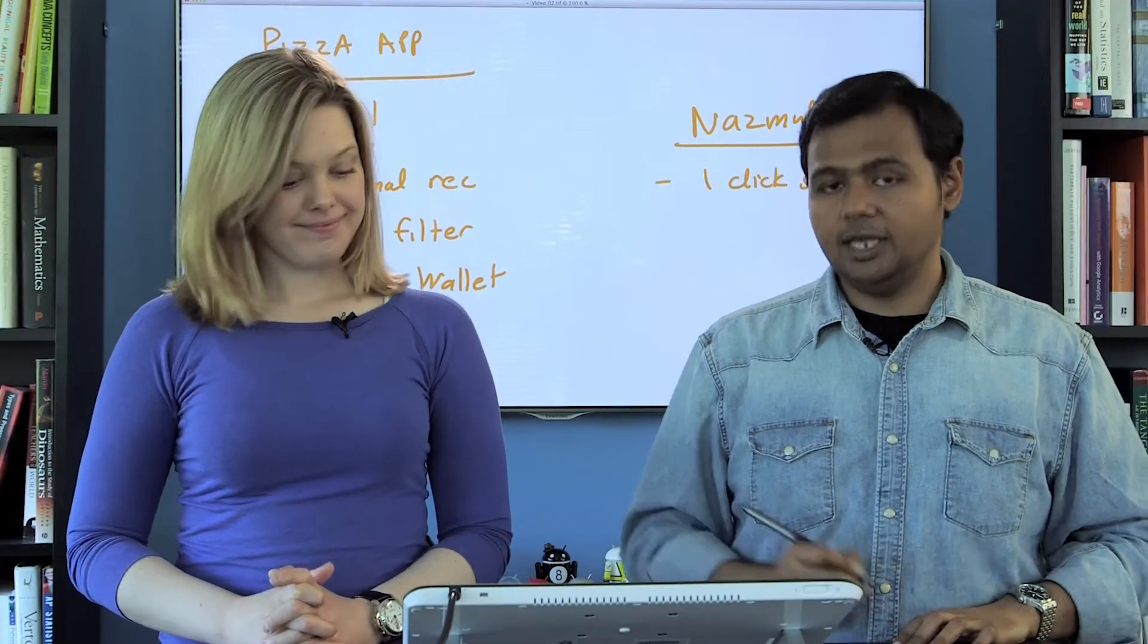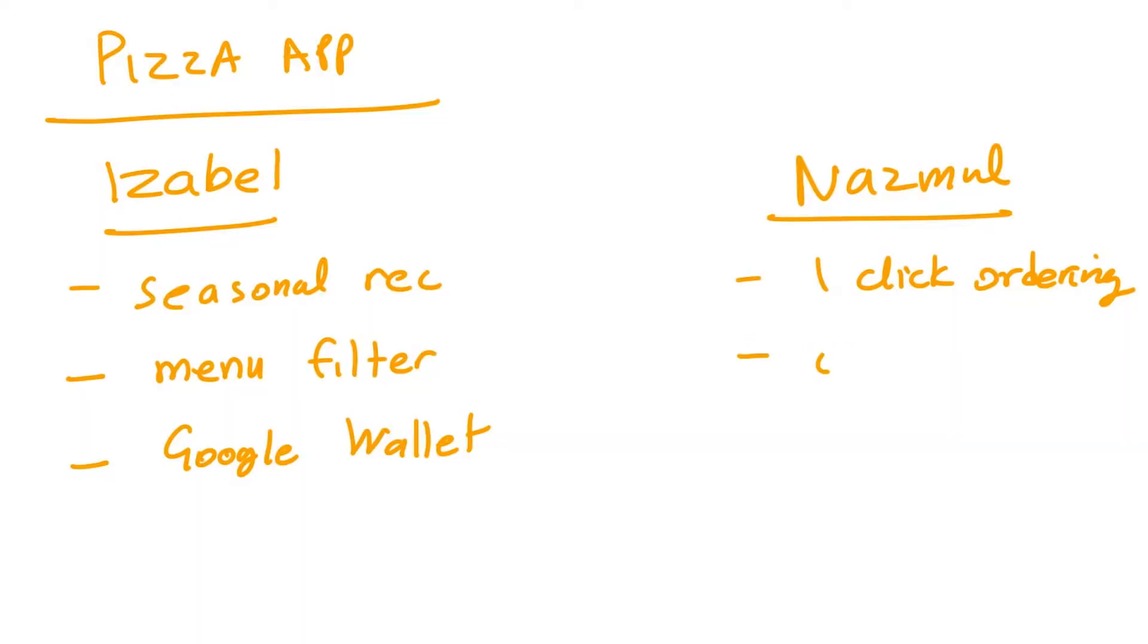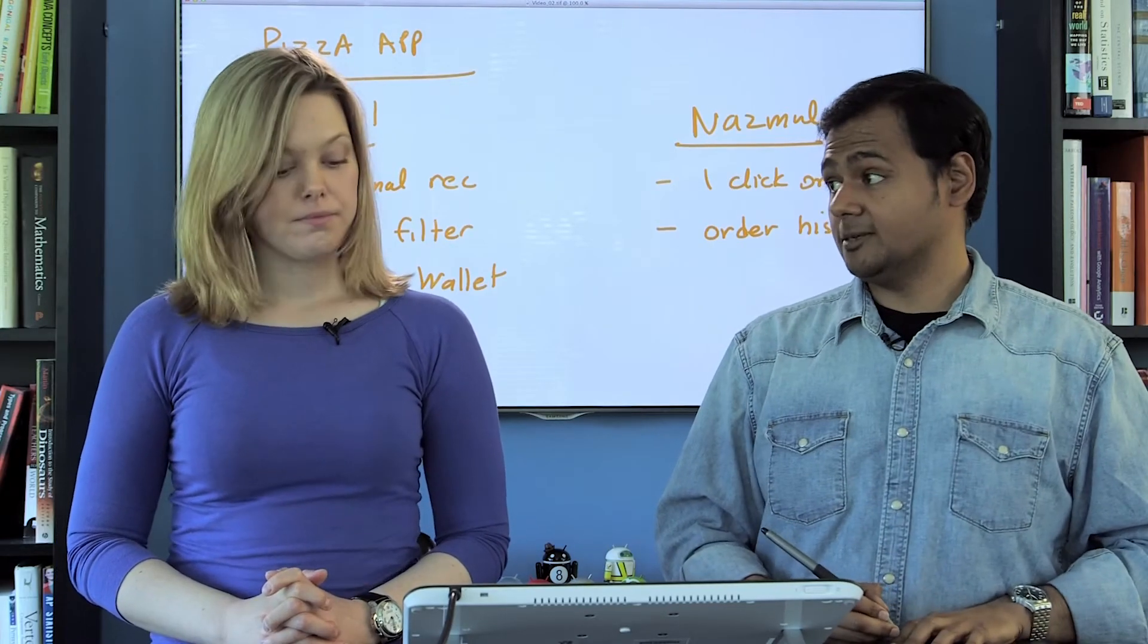The second feature I would pick is order history. This would allow someone to find out what they've placed an order for before and see how much money they're spending on pizza.